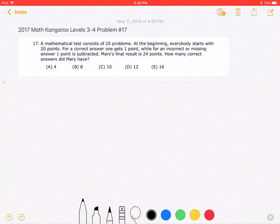Okay, so we know that the number of correct answers minus the number of incorrect or missing answers must be equal to 4. This is because Mary's final result is 24 points and the test consists of 20 problems.